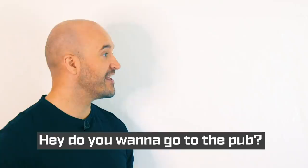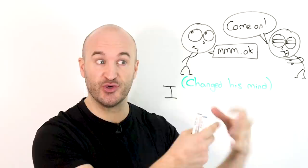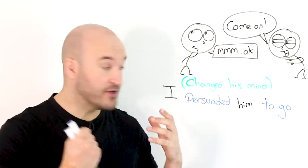Another example — if you change someone's mind. Hey, do you want to go to the pub? No. I'll buy the drinks. Okay. In this case, I changed his mind, I persuaded him, influenced him, convinced him to do something. So I can use the causative verb 'persuade'. I persuaded him to go. And again, we can use other causative verbs.